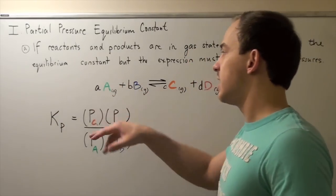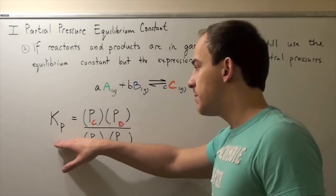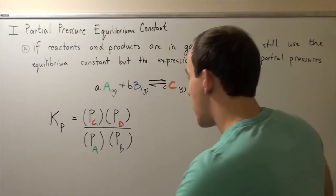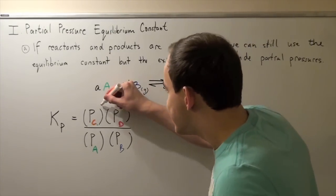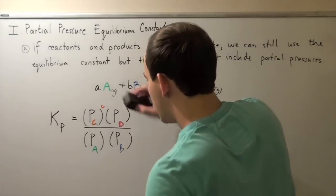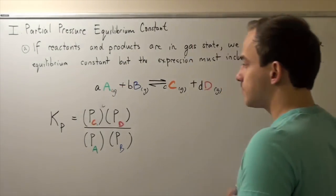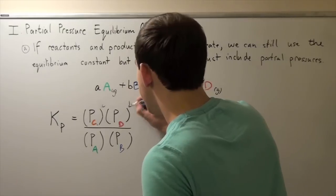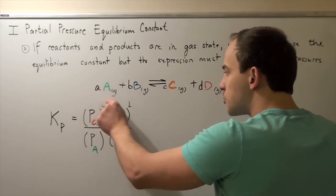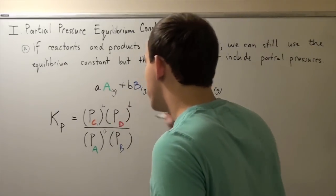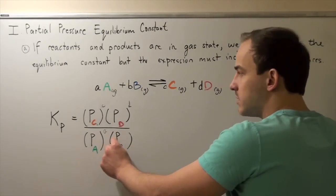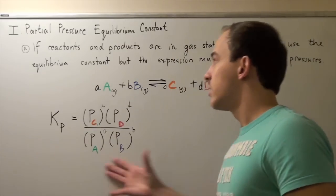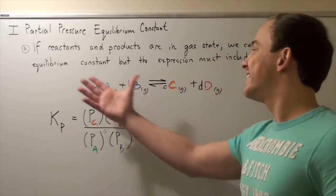Our equilibrium constant for this gaseous reaction is the following. Our equilibrium constant Kp is equal to the partial pressure of our gas product C to the lowercase c power, times the partial pressure of D gas to the D exponent, divided by the partial pressure of gas A to the lowercase a power, times the partial pressure of our B reactant gas to the lowercase b power. And this is our equilibrium constant expression for gaseous reactions.